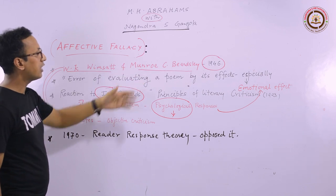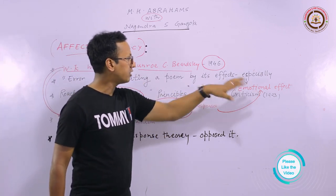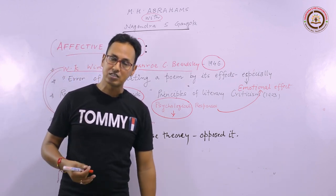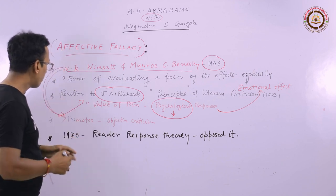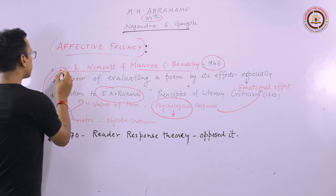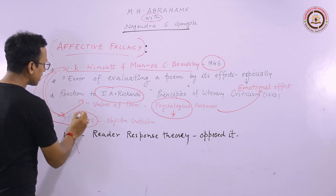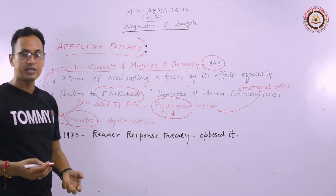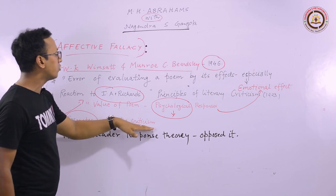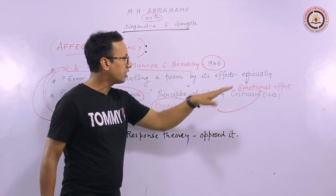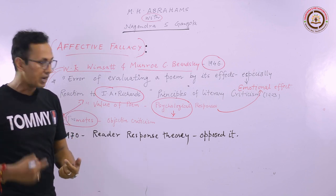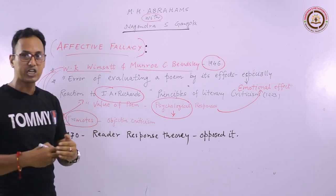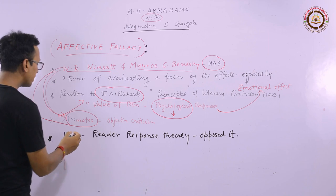After this theory came into limelight, many people started supporting it and some started criticizing it. Wimsatt and Beardsley promote the idea that affective fallacy advocates for objective criticism — because if we are not under the emotional effect, the chances of committing an error will be less, and we are going to analyze the piece by maintaining objectivity.